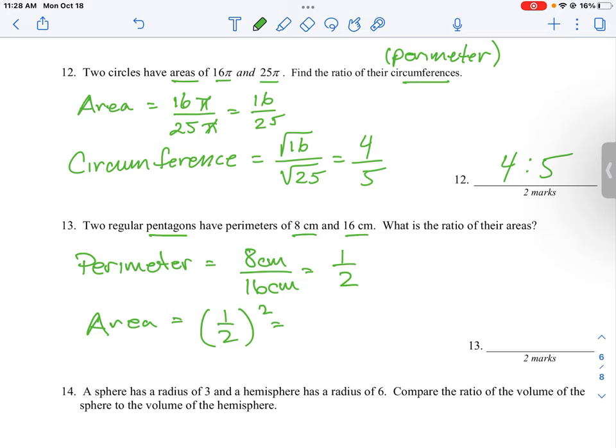So it's going to be one half squared which is equal to one quarter, or you can say 1 to 4. So 13 is just the exact opposite of how you look at question number 12.